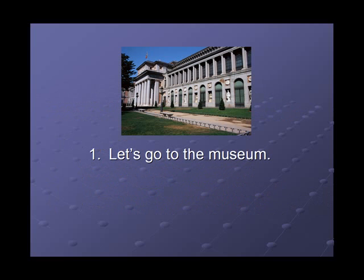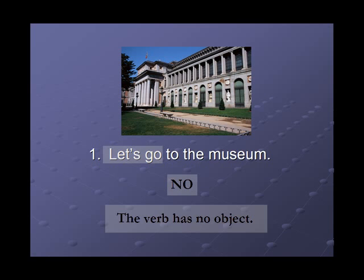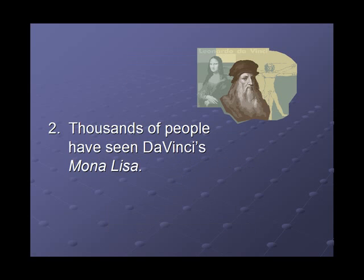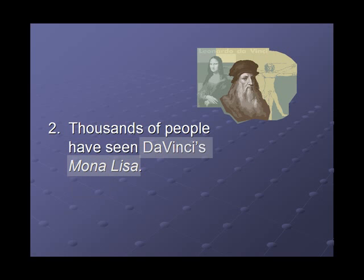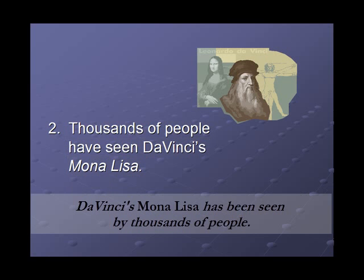Number one: let's go to the museum. Can we change it? No — there is no object. Number two: thousands of people have seen da Vinci's Mona Lisa. Is it possible to change it? Yes. The verb is 'have seen' and the object is 'da Vinci's Mona Lisa.' If we change it: da Vinci's Mona Lisa has been seen by thousands of people.